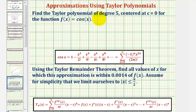We want to find the Taylor polynomial of degree five centered at c equals zero for the function f of x equals cosine x. Then we'll use the Taylor remainder theorem to find all the values of x for which this approximation is within 0.0014 of the true value of f of x.